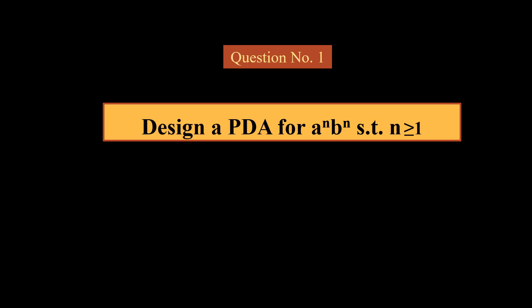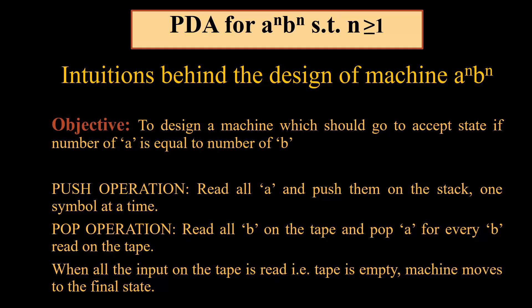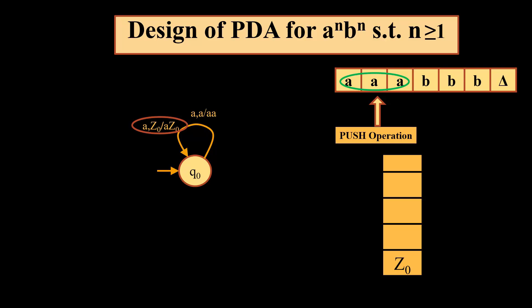Now we will talk about designing a pushdown automata for aⁿbⁿ such that n is greater than or equal to 1. The intuition behind the design: the machine should go to the accept state if the number of a's equals the number of b's. We will perform a push operation for all a's read, pushing them onto the stack. Once we start reading b's, we start the pop operation and pop all elements from the stack, which must compulsorily be a's. When the tape is empty, the machine should move to the final state with no elements left on the stack.